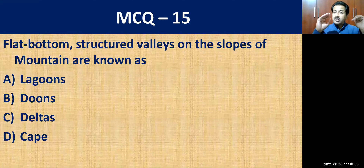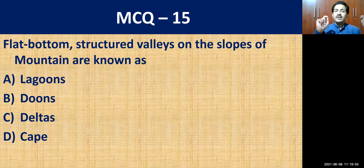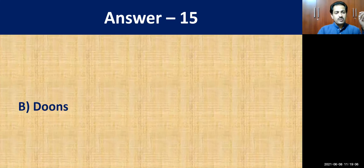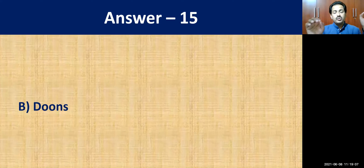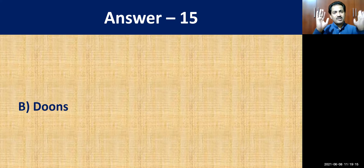MCQ question number fifteen: flat-bottomed structured valleys on the slopes of mountains are known as? The options are lagoons, dunes, deltas, or cape. The correct answer is dunes. Flat-bottomed structured valleys on the slopes of mountains are called dunes — Dehradun is the best example.